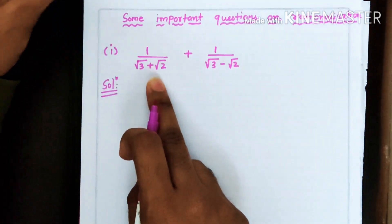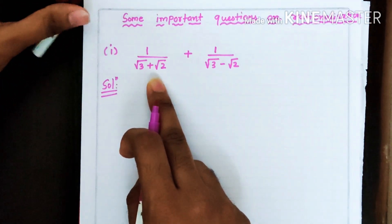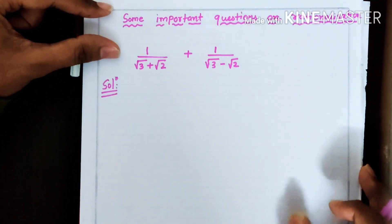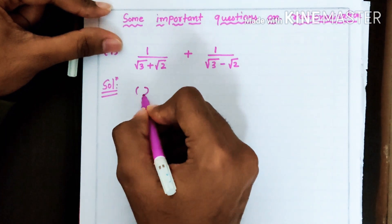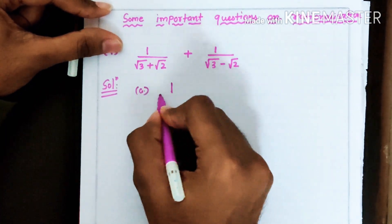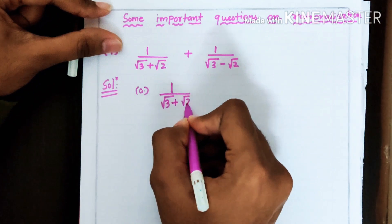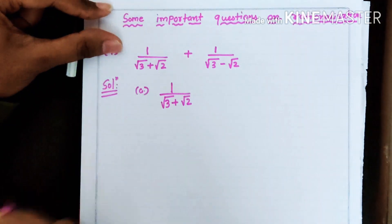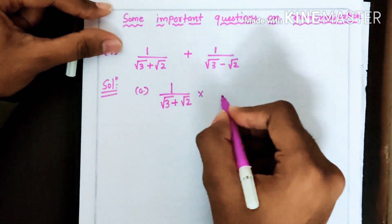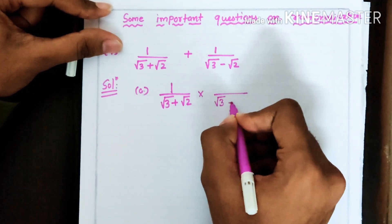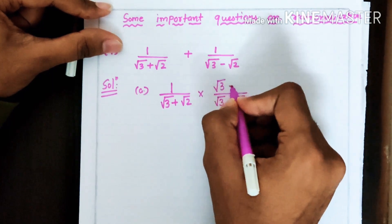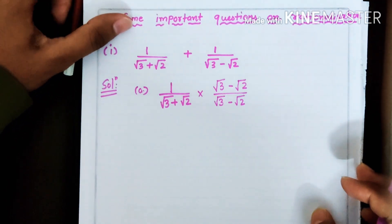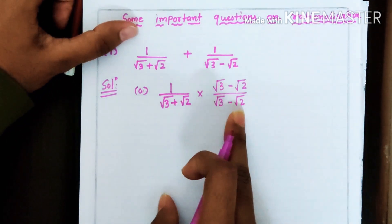Till now we have done rationalization for a single term only. Now here a combination of terms is present. So what we will do is first rationalize the first term. Let us call this complete first term A. We will rationalize it, so our rationalizing factor will be (√3 − √2). The rationalizing factor is multiplied in both the numerator and the denominator.